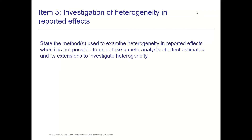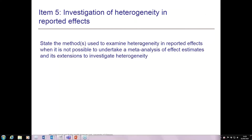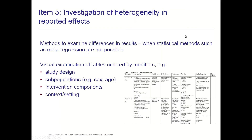Item 5 says: state the methods used to examine heterogeneity and reported effects when it's not possible to undertake a meta-analysis of effect estimates, and as extensions to investigate heterogeneity. In these types of reviews, it's unlikely that we would be able to conduct formal statistical sensitivity analysis. But these reviews tend to have high levels of heterogeneity, and that heterogeneity can be valuable — it can be seen as a strength because the review can incorporate heterogeneous data leading to more nuanced conclusions. Examining differences across studies and patterns in the data can lead to useful exploratory analysis, refine theory, and generate new hypotheses about why an intervention may not always have the same effect.